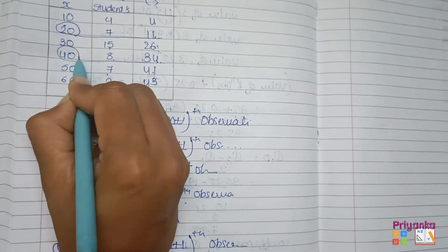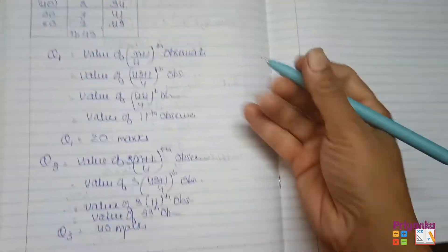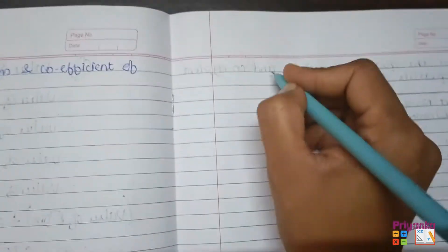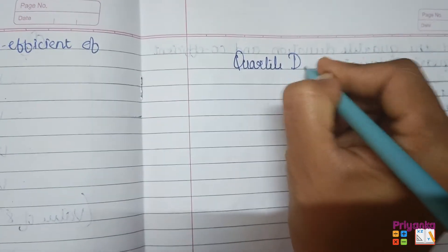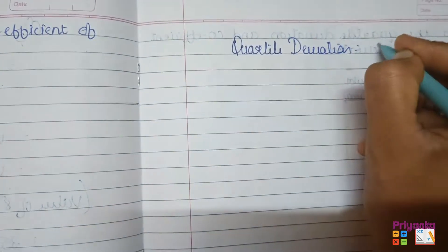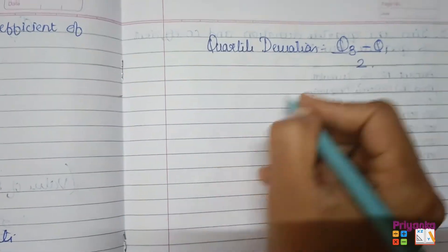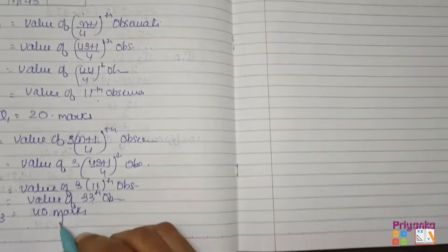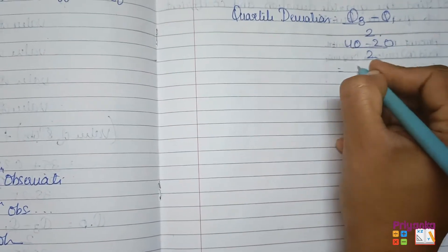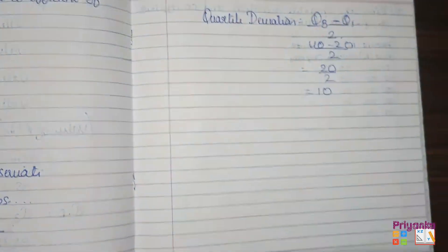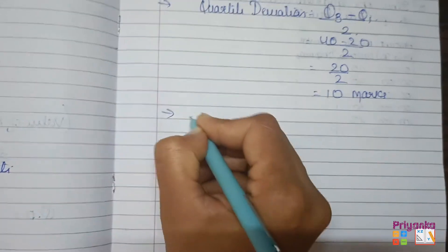Now with Q1 = 20 and Q3 = 40, we find quartile deviation: (Q3 − Q1)/2 = (40 − 20)/2 = 20/2 = 10 marks.